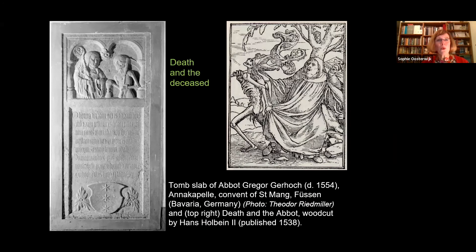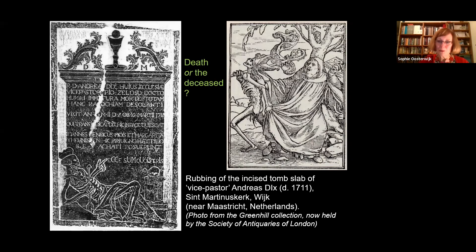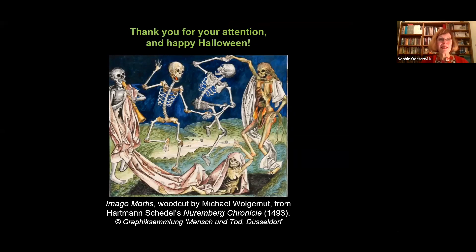The tomb at the convent of Oberalteich in Bavaria shows Abbot Gregor Georg, who died in 1554, being confronted with Death holding his scythe and hourglass — and for comparison, Holbein's woodcut of Death and the Abbot, in which Death has already appropriated the abbot's mitre and staff and the fat abbot is pulled along without mercy. Where I started — on the monument of Andreas Dix in Weg — it remains ambiguous whether the figure is Andreas Dix himself or Death personified. But ultimately, from where we are, it is the same thing, isn't it? It is death of all times and death in the past, but definitive death. Thank you very much, and happy Halloween.